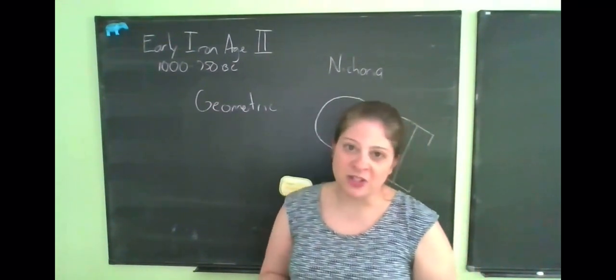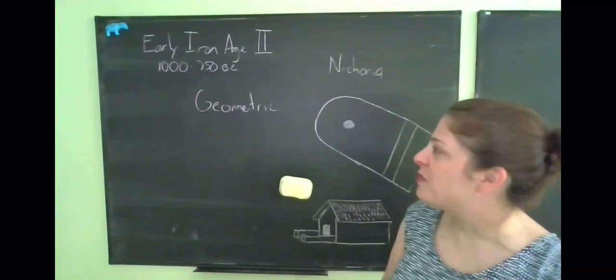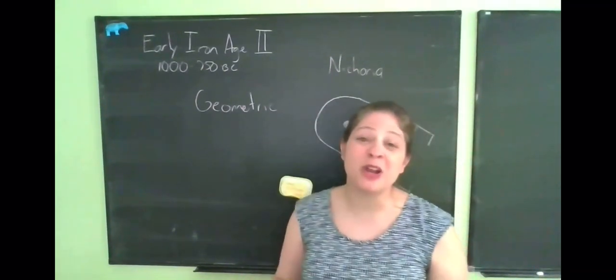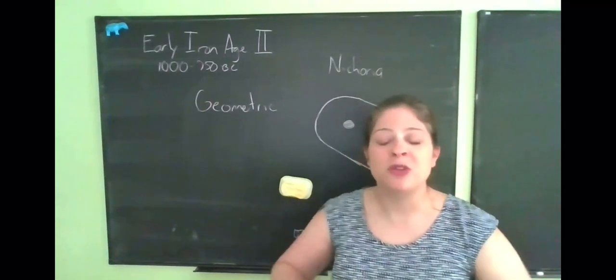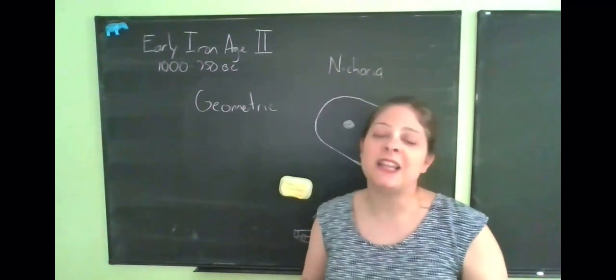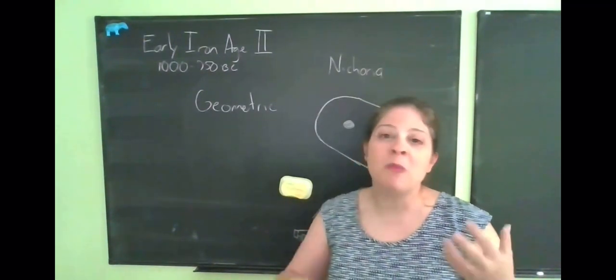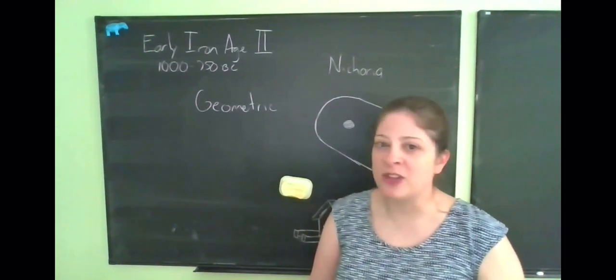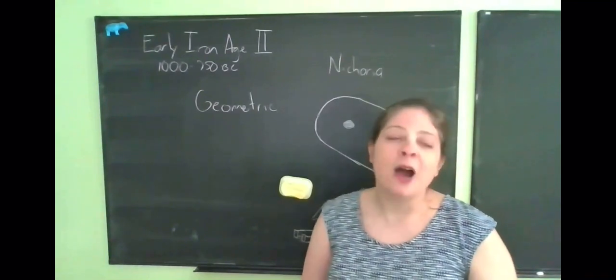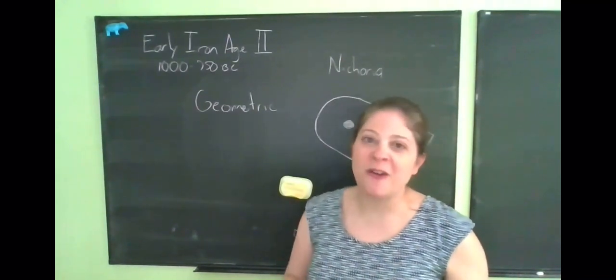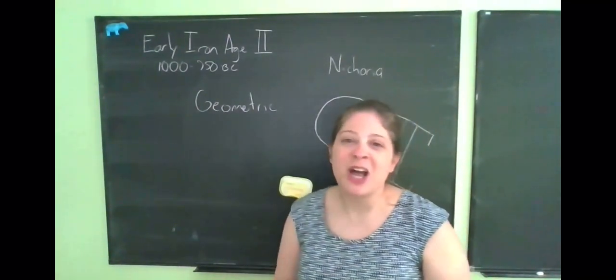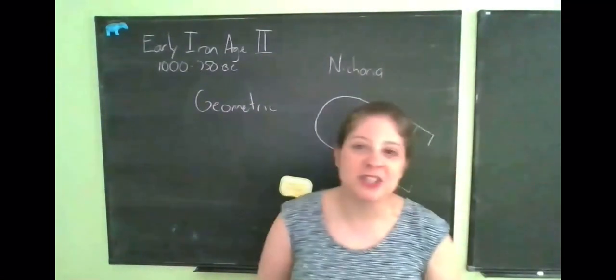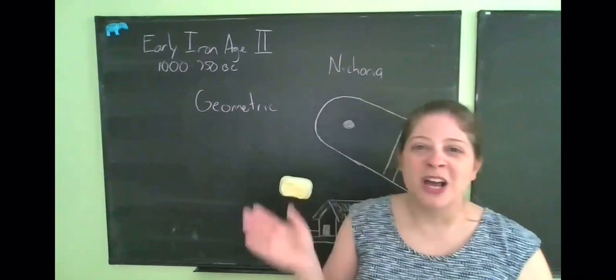Much of the evidence, though, for the early Iron Age comes from the Homeric poems. So we don't have writing, but we do have evidence from these two epic poems, the Iliad and the Odyssey, which probably were composed in this period and therefore provide some evidence for what life and society was like in this period. And we're going to discuss those in much more detail in the next few lectures. So we're going to stop here for now with early Iron Age too. All right. Thanks for watching. Bye.